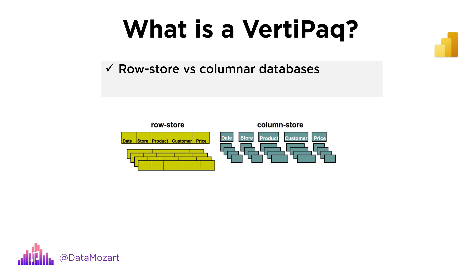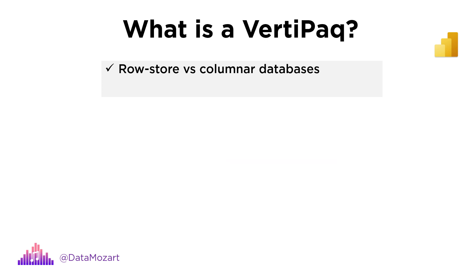Columnar databases are usually implemented in large analytical systems, as they are optimized for vertical data scanning, which means that every column has its own structure and is physically separated from other columns. Another important distinction in order to understand what VertiPaq is, is to understand the difference between Formula Engine and Storage Engine.